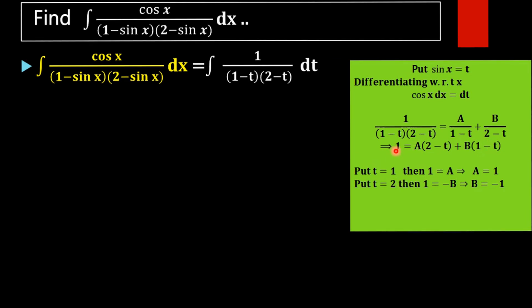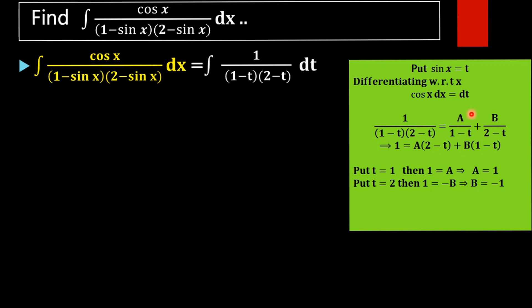To find A, put t equal to 1: then 1 equals A into (2 minus 1), which is A into 1, plus B into (1 minus 1), which is 0. So A equals 1. To find B, put t equal to 2: then (2 minus 2) becomes 0, and we get 1 equals A into 0 plus B into (1 minus 2), that is negative 1. So 1 equals negative B, which implies B equals negative 1.